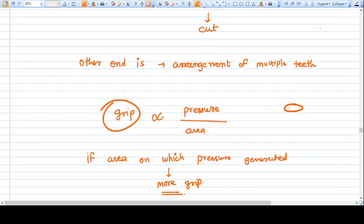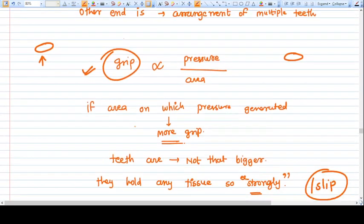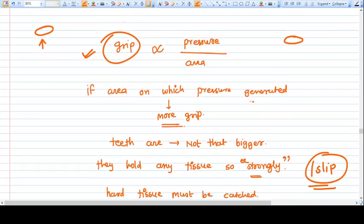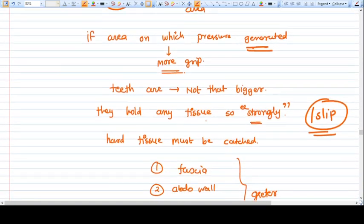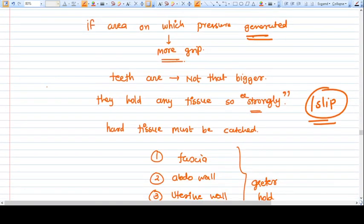In the case of Alice forceps, the opposing area of the two blades is a smaller one, so the area is small and the pressure is high, so the grip will be very good. The area in which pressure is generated creates more grip. The Alice forceps has teeth.